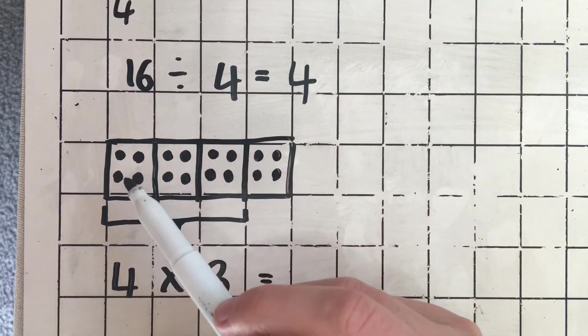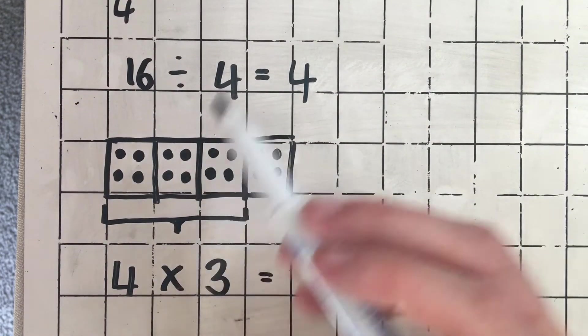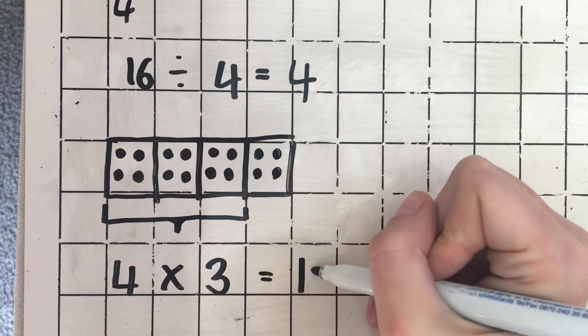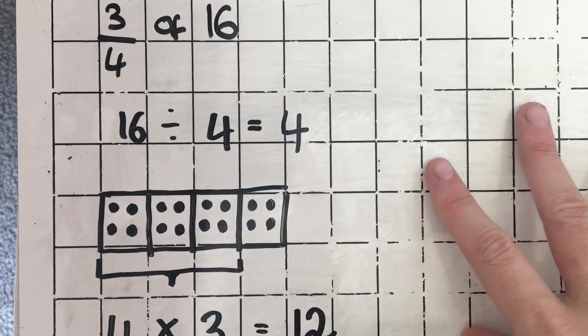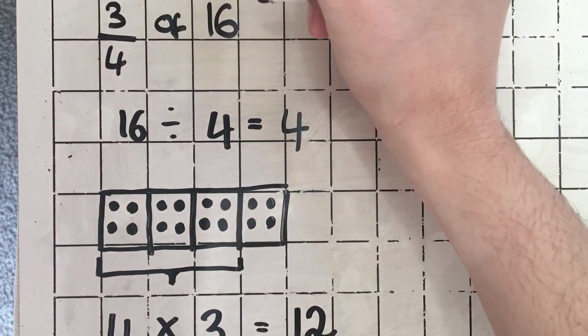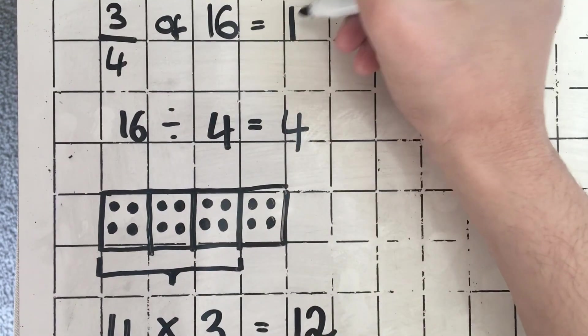So it's 4, 8, 12. So 3 quarters of 16 is 12.